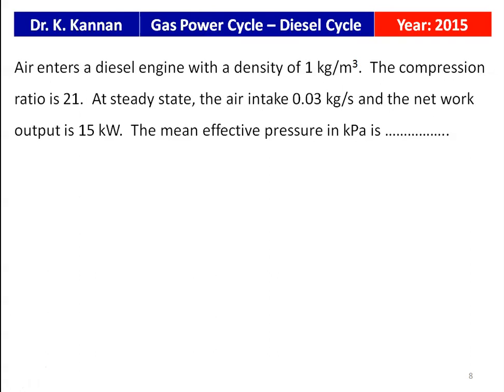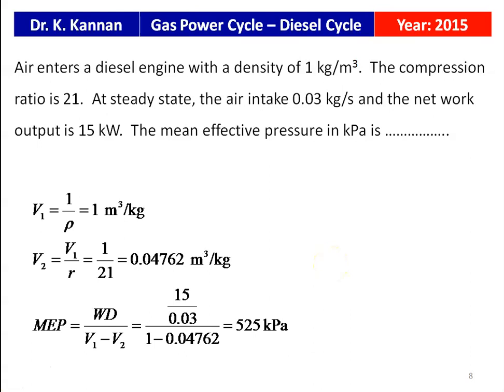The next question is from the 2015 question paper. Air enters a diesel engine with a density of 1 kg/m³, the compression ratio is 21, the air intake is 0.03 kg/s at steady state, and the net work output is 15 kW. The specific volume v1 = 1/ρ = 1 m³/kg. Volume at end of compression v2 = v1/r = 1/21 = 0.04760 m³/kg. Mean effective pressure = work done / (v1 − v2) = (15/0.03) / (1 − 0.04762) = 525 kPa.